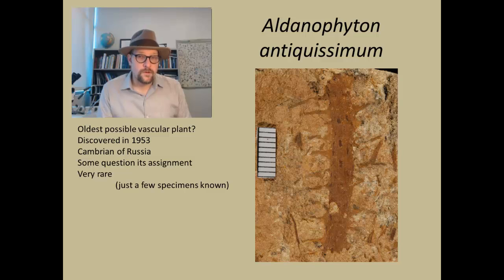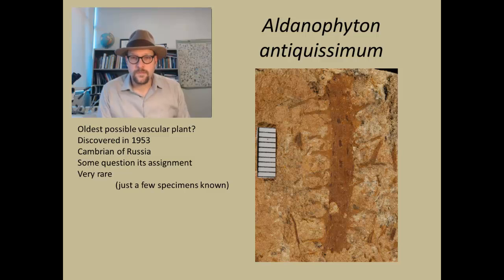A couple of things we notice in this fossil: we don't see any sporophytes. It appears to be a long piece with some pieces coming off of it, so it kind of looks like some of the green algae that we have seen before.